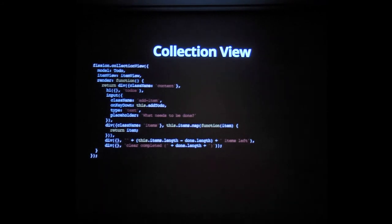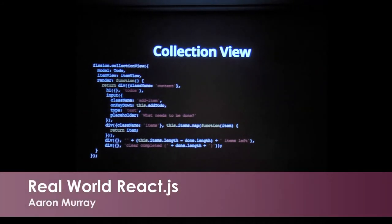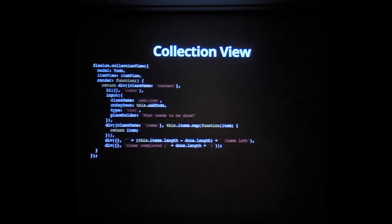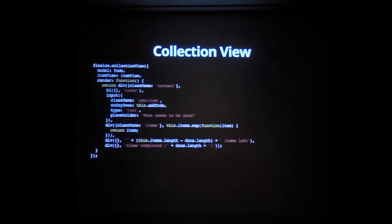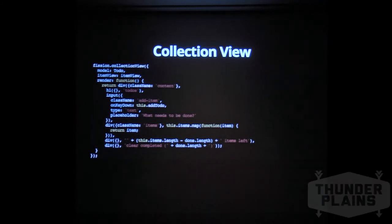Here's the collection view. Whenever I've used Backbone I've always used Marionette with it. The one thing I always liked out of Marionette was a collection view — if I create a collection view, give it a model and an item view, it's going to automatically take my collection, iterate over it, and render each model out of that collection into whatever item view I gave it.